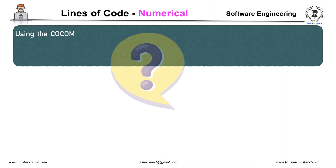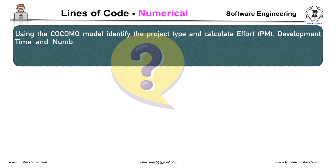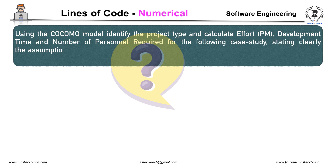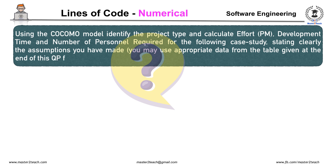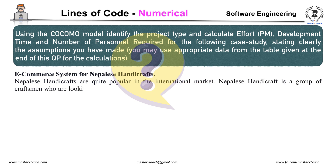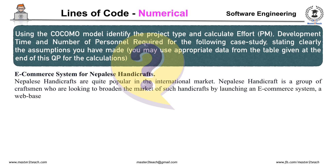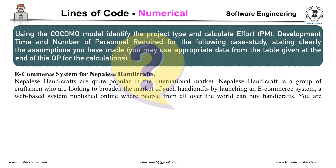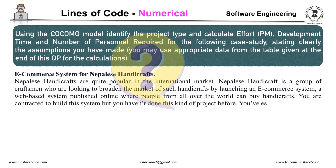Let's take a sample question from the internet. Using the COCOMO model, identify the project type and calculate effort in person-months, development time, and number of personnel required. The case study is an e-commerce system for Nepal handicrafts — a web-based system where people from all over the world can buy handicrafts. You are contracted to build this system but haven't done this kind of project before. The estimated lines of code is 280 KLOC.